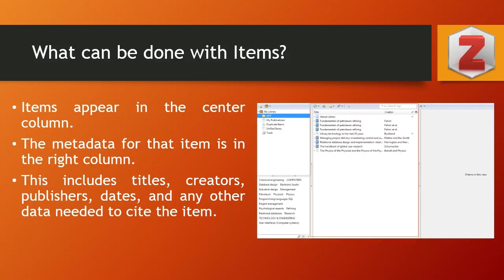After installation, Jotero looks like this. The Jotero interface is divided into three panes: left pane, center pane, and right pane. The left pane is divided top and bottom — the top is where we organize. There are ready-made options like My Library, which contains My Publications, Duplicate Items, and Trash. Below that there is a provision to store tags created when adding items. The center pane is the most important area where we add items, and the right pane contains the metadata.